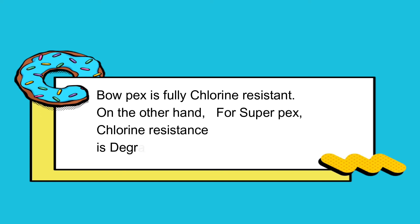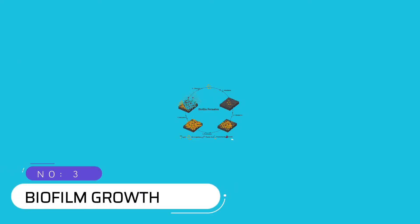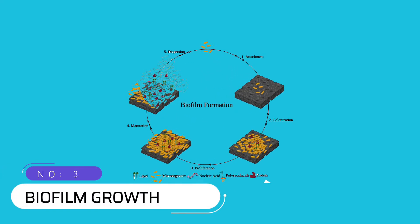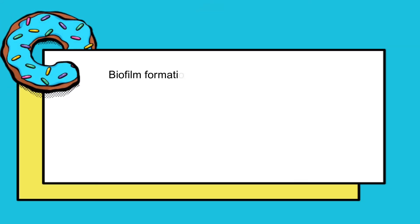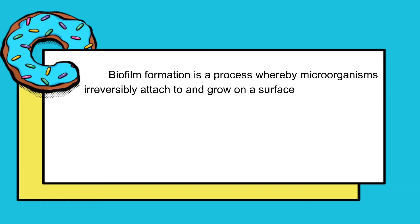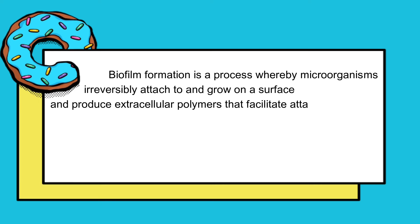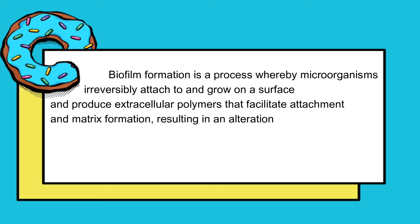Number 3: Biofilm Growth. Biofilm formation is a process whereby microorganisms irreversibly attach to and grow on a surface and produce extracellular polymers that facilitate attachment and matrix formation, resulting in an alteration in the phenotype of the organisms with respect to growth rate and gene transcription. In BioPEX, biofilm growth rate is high, but for SuperPEX it's low.